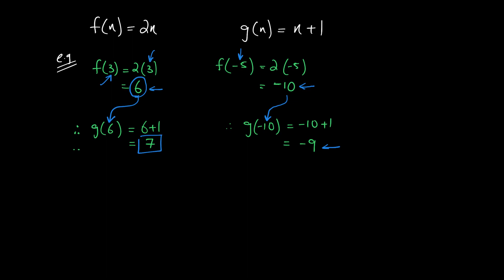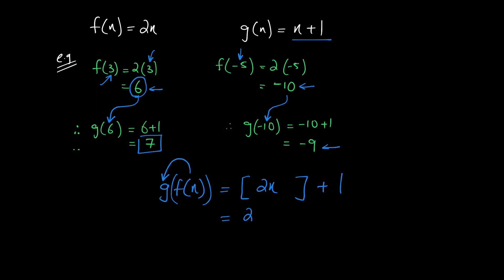When that same output -10 is inserted into function g, I get a new output of -9. So I can come up with one single combined function that takes the input values of x and gives the final output. That single function is called g∘f(x), where f(x) is the input to function g.